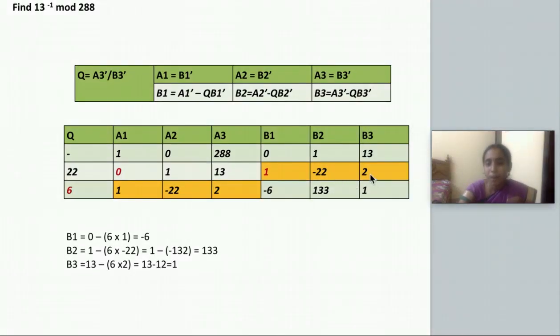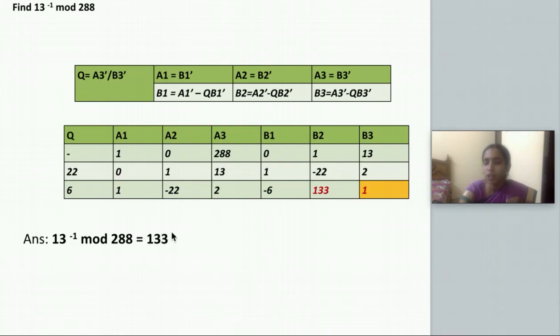Then B3 value is previous A3 value minus Q into previous B3 value that is 13 minus 6 into 2. That is 13 minus 12, 1. So we are getting 1. If we are getting 1, we can stop the iteration and we can write the answer as B2's value. So the value of B2 is 133 and my answer is 133. So 13 inverse mod 288 is 133.